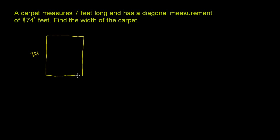That's our carpet. And it has a diagonal measurement of square root of 74 feet. So this distance right here, the diagonal of the carpet, is the square root of 74 feet.